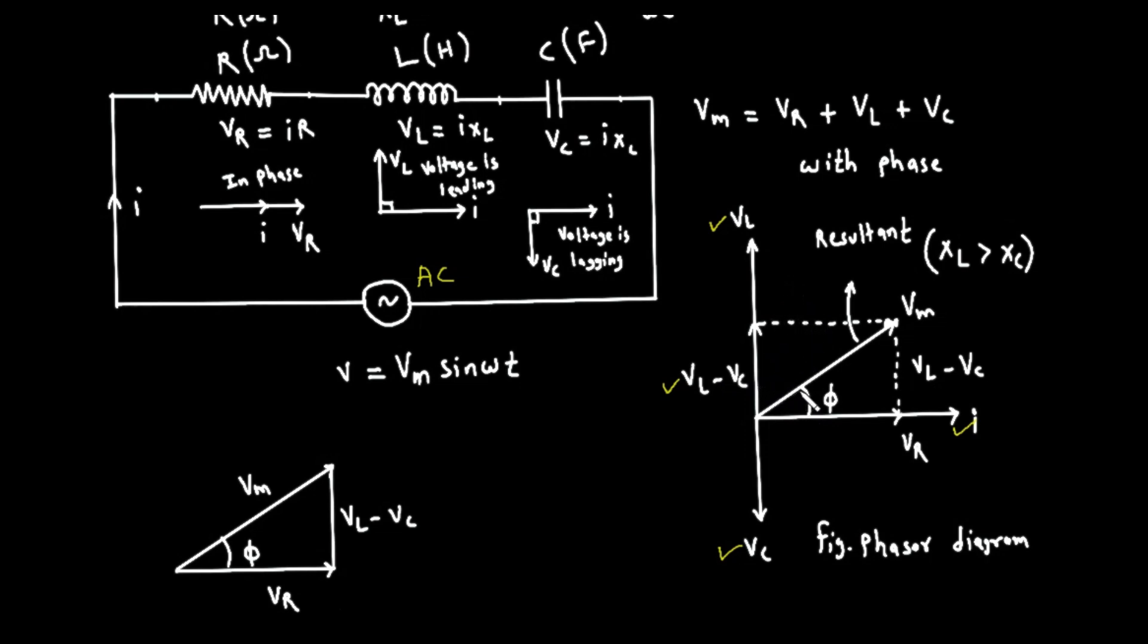Now, we are left with two phasors, the horizontal V sub R, and the vertical, V sub L minus V sub C. To find the total source voltage, V sub M, we add these two phasors together using vector addition. This forms a right-angled triangle, and V sub M is the hypotenuse, or the diagonal. This is our resultant voltage. The angle between the total voltage V sub M and the current I is called the phase angle, represented by the Greek letter phi. This angle tells us whether the total circuit voltage leads or lags the current, and by how much.